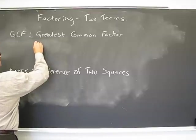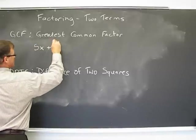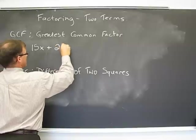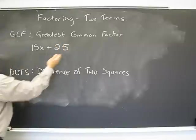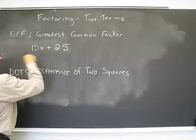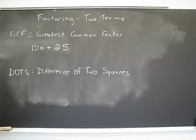So the first example I'm going to start off is something like 15x plus 25. As you see, we have two terms. Cannot be simplified, right, because the x doesn't allow.